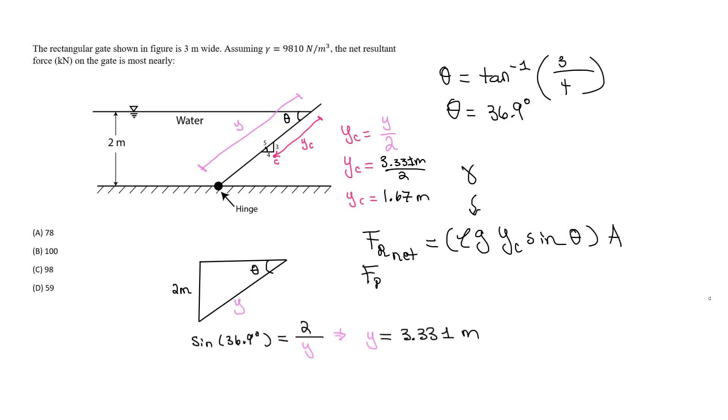The force resultant net is going to equal our gamma, which is 9810 - keep your units, newton per meter to the third - times y sub c, which is 1.67 meters, times sine of the angle theta, 36.9 degrees. And all of this is multiplied by the area.